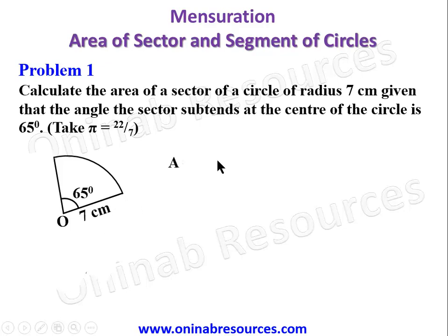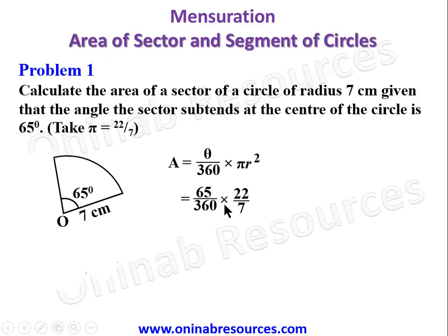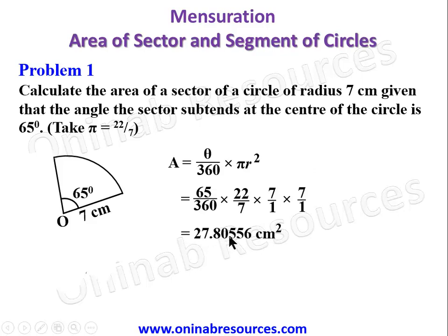The formula for the area of the sector is A = (theta/360) × π r². Substituting the known parameters: Area = (65/360) × (22/7) × 7 × 7. From the calculator, we get 27.806 square centimeters. Since we are not given any degree of accuracy for the final answer, we leave it as that.